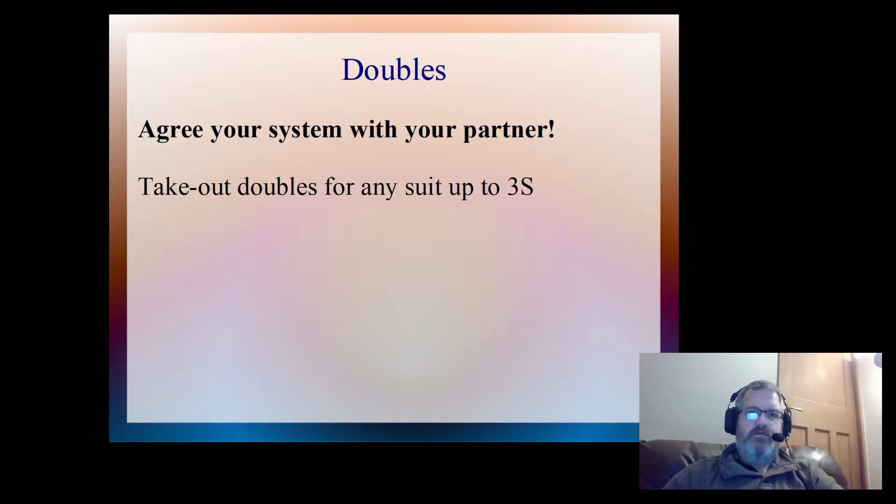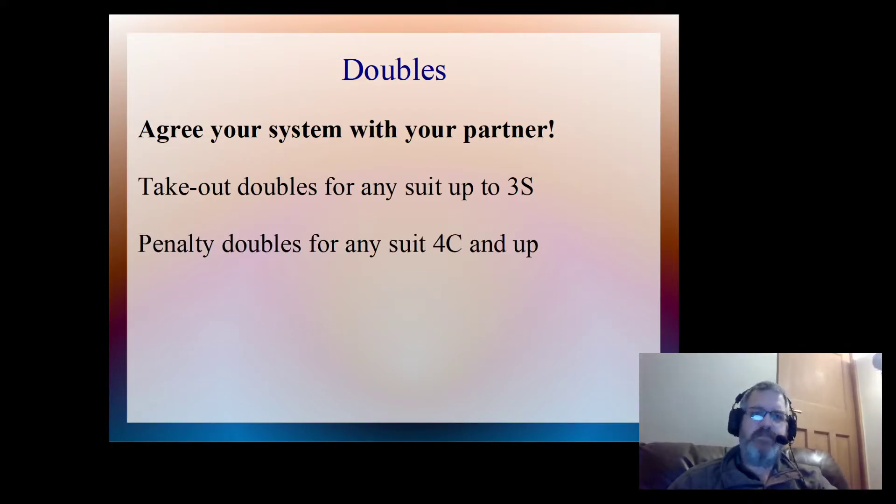So the rule is: takeout doubles are for any suit up to three spades. Now that's important. If you think about the bidding, somebody might open at the three level as a preemptive bid, and by having this agreement with your partner it means that a double at that point is for takeout. Same as if you open one spade and respond three spades, a double then is still takeout. It doesn't matter how you get to that point. Which then means that penalty doubles are for any suit from four clubs upwards and also for doubles of any no trump bid.